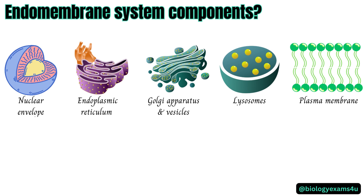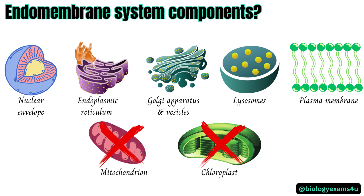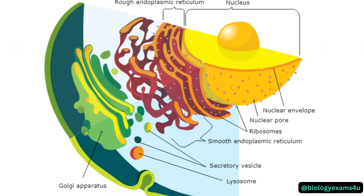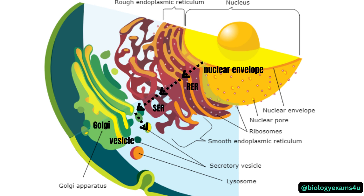The endomembrane system does not include the membranes of either the mitochondrion or chloroplast. Now let us see how these organelles are positioned inside the cell. The nuclear envelope surrounds the nucleus and is in continuous connection with both rough and smooth endoplasmic reticulum. The endoplasmic reticulum is in close proximity with the Golgi apparatus. Enzymes and substances are packaged in vesicles to move to different destinations. The lysosome is involved in intracellular digestion, and the plasma membrane is involved in endocytosis and exocytosis.